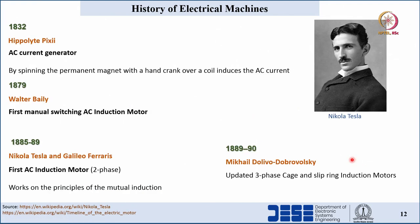From 1832 to 1890, huge research happened. In 1832, the first AC current generator was invented by Hippolyte Pixie, who rotated a permanent magnet over a coil using a hand crank to induce a current. That was the first AC generator. After that, in 1879, Walter Bailey invented the first manual switching induction motor, where instead of commutators he manually switched the coil excitations.